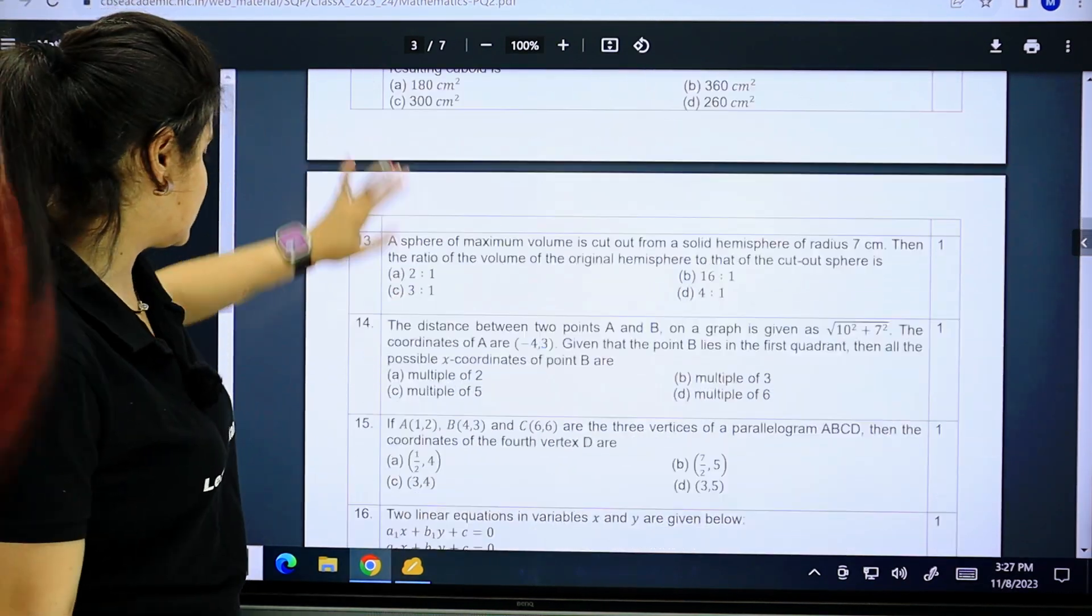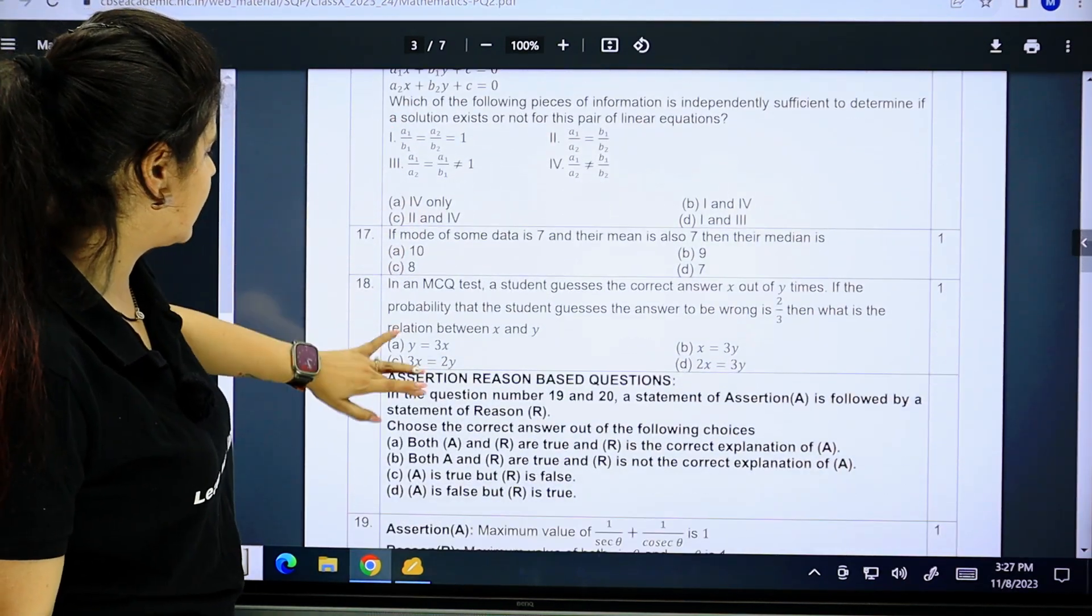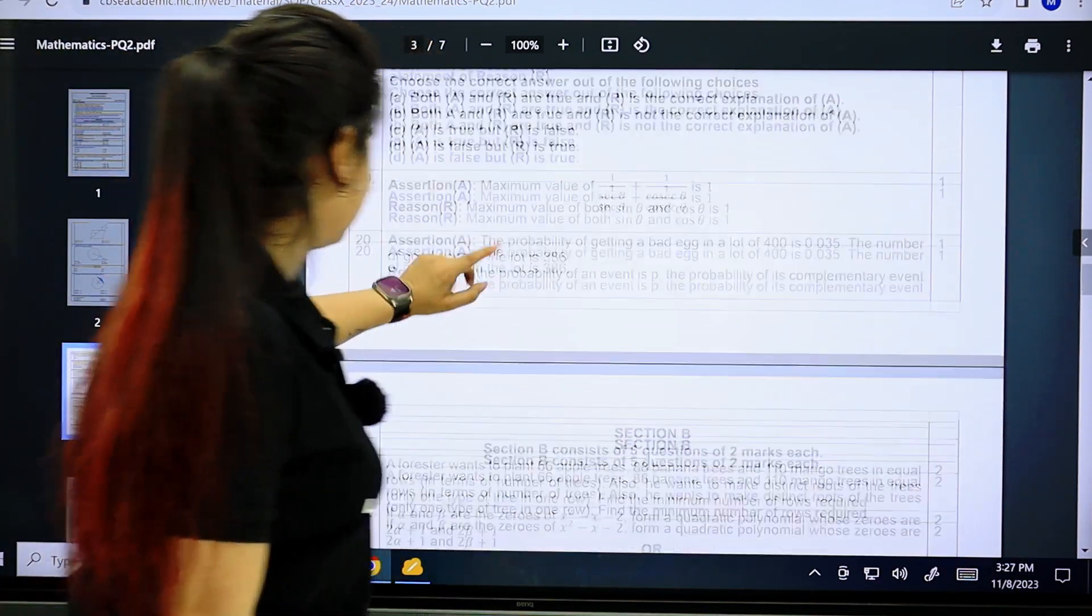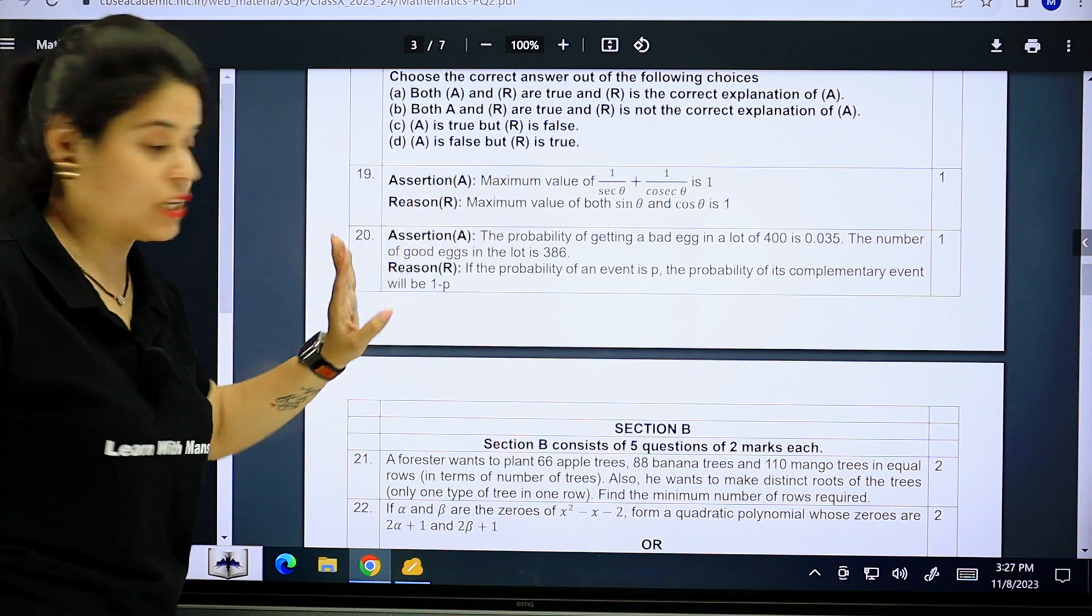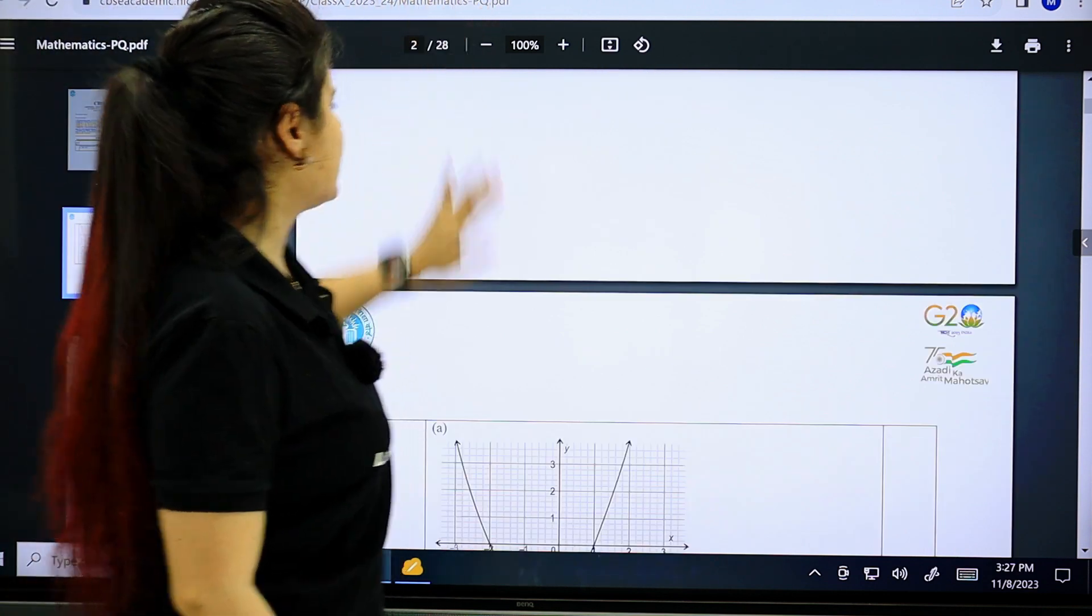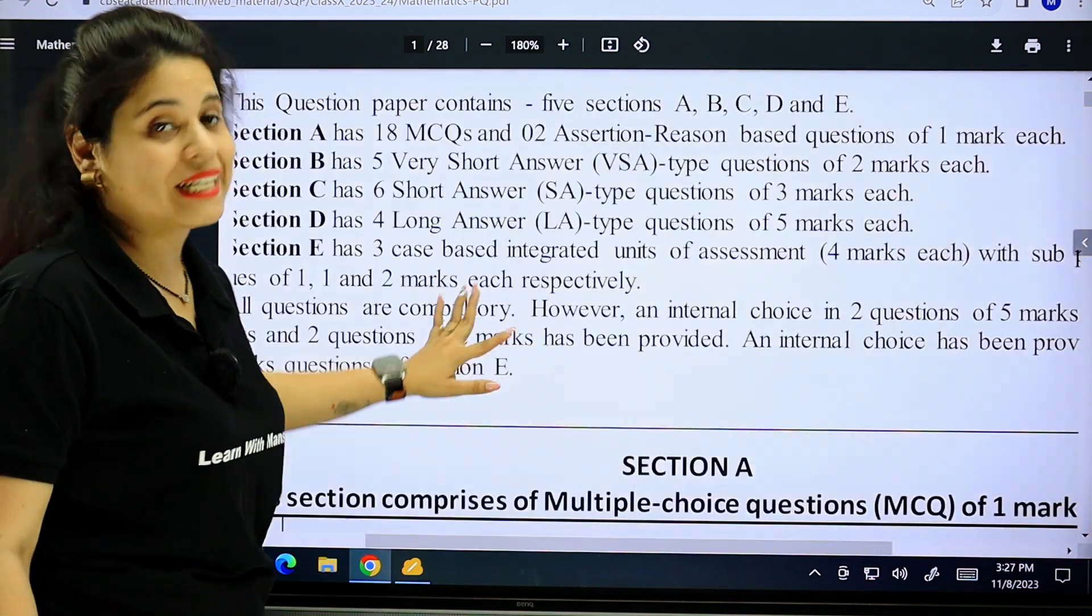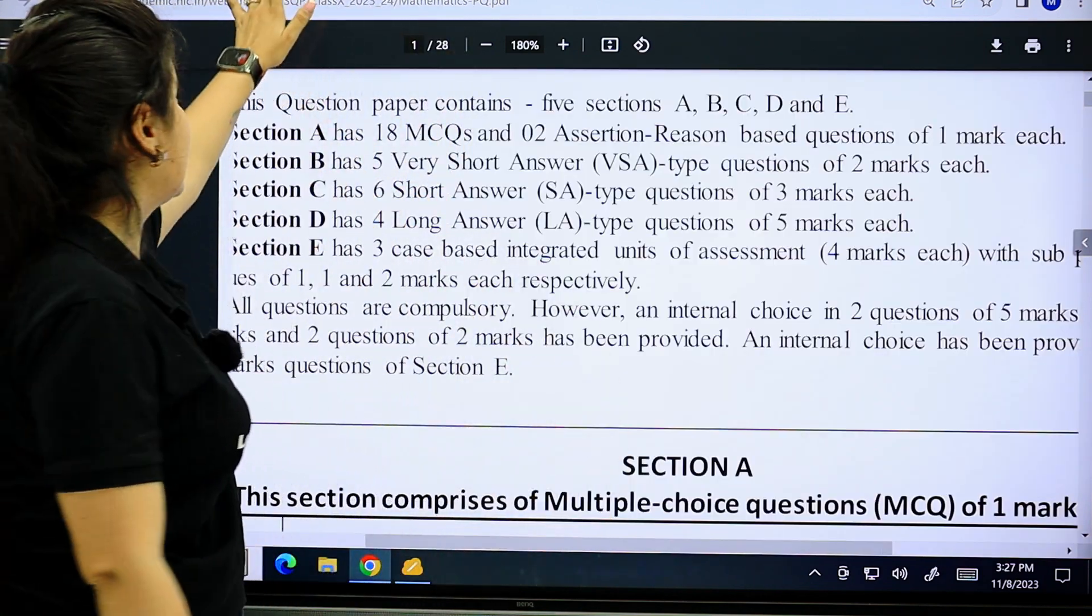In this section, there will also be questions in the first section. Here we come from the last section. Here are 19-20 questions. These are two assertion reasoning. Same format, we have also come from the practice paper. There is no difference. Same format. It is very good for your practice.